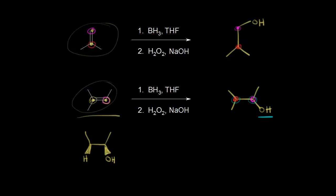Let's think about what else is attached to those carbons. The carbon in magenta also has a hydrogen attached — going from sp2 to sp3, that hydrogen must be going away from us in this product. For the other carbon in red, there's a methyl group attached; if the hydrogen is coming out at us as a wedge, that methyl group must be going away from us in space. So that's one of our possible products, where we show the OH coming out at us in space.